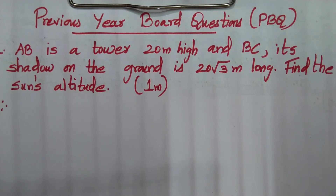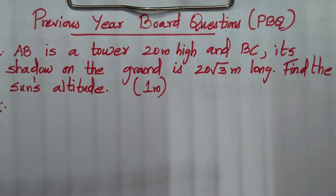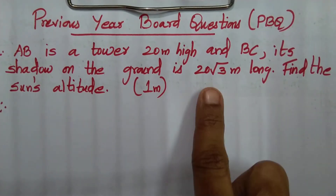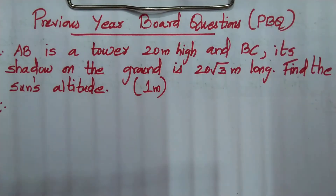We will see previous year board questions. Question number one: AB is a tower 20 meters high and BC is its shadow on the ground which is 20 root 3 meters long. Find the sun's altitude.